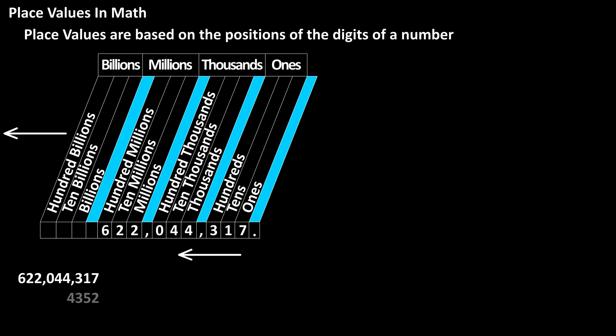Typically numbers with four digits, such as 4352, are not written with commas.